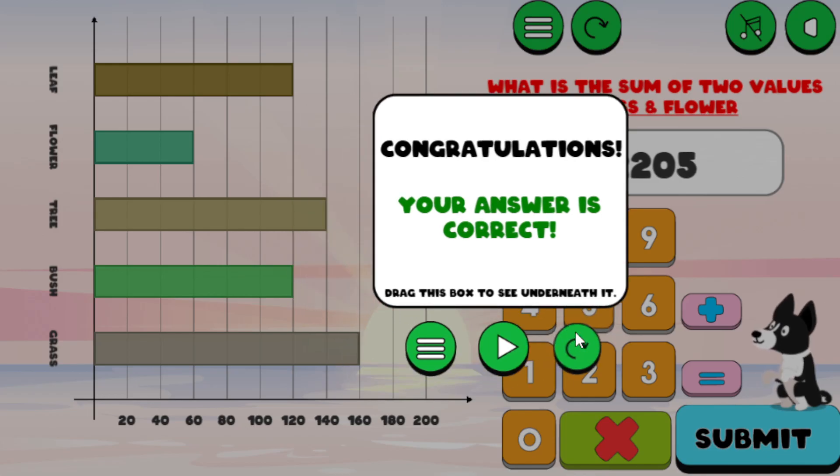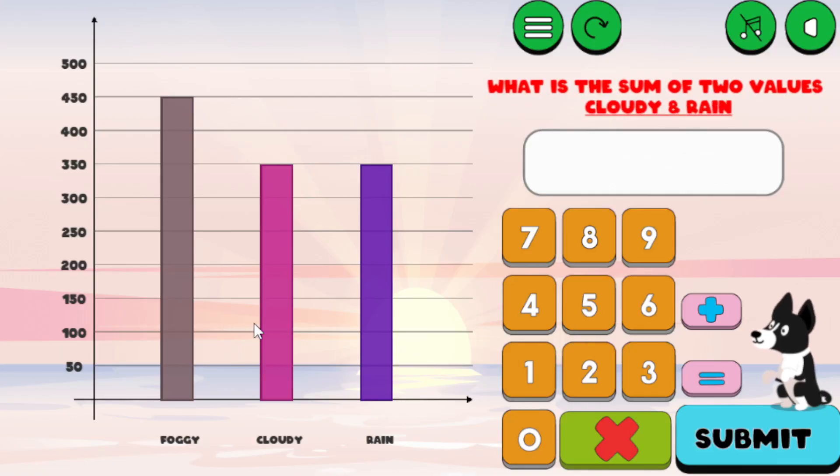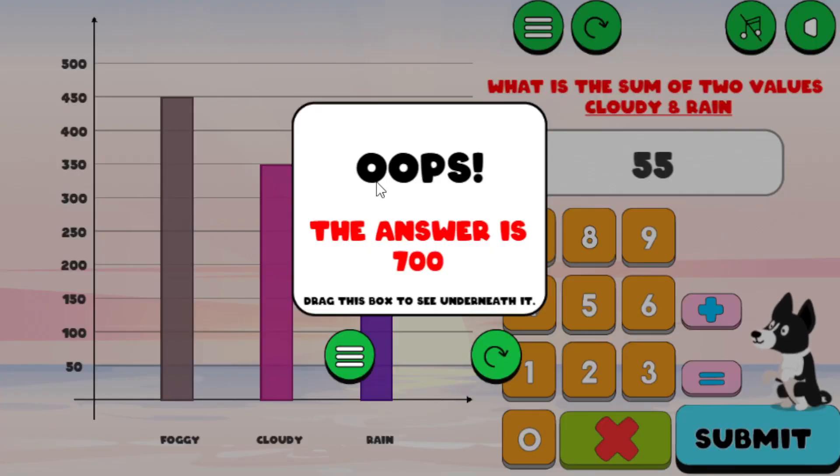Submit, and it's correct. And then if I go ahead, let's not even look at it, I'm going to go ahead and get a wrong answer. Submit, it says, oops, the answer is 700. And this is where you might want to move this, what we call it, the game over panel.